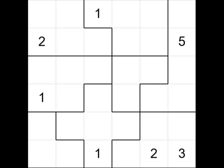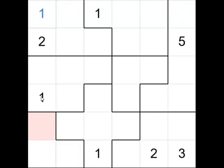So let's get to solving. Let's start with the group at the top here — it must contain a number 1. The 1 cannot be in that cell, or that cell, or that cell, because they are adjacent to that 1. Therefore, the only place for the 1 is there. Similarly, if we come down to this block of 3 here, the 1 cannot be there because it's adjacent to that 1. It cannot be there, adjacent to that 1. So therefore, it must be there.